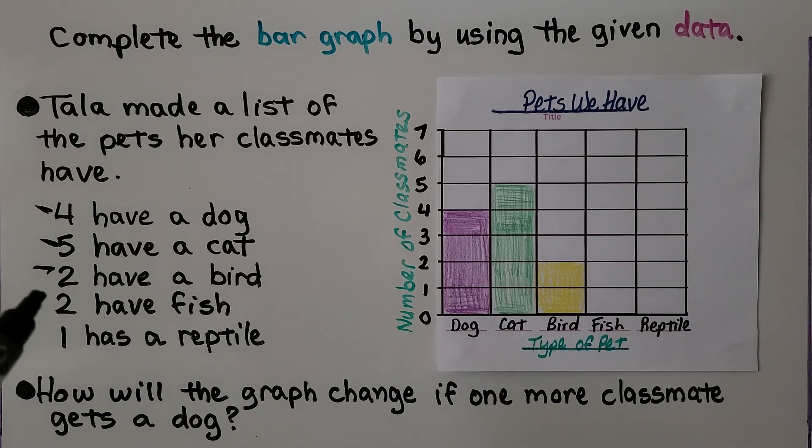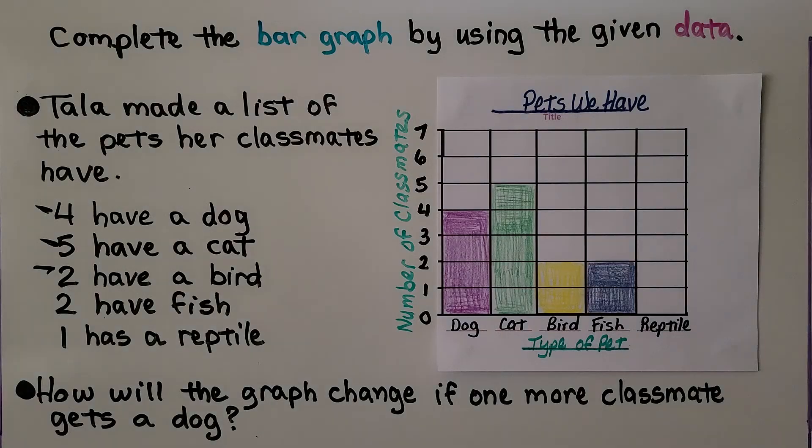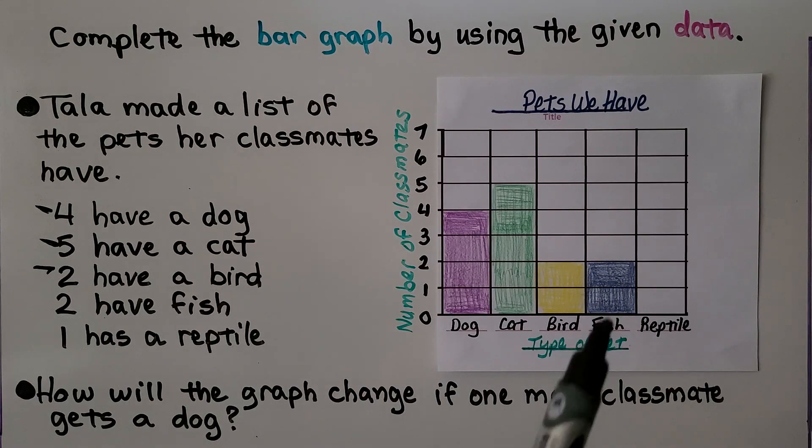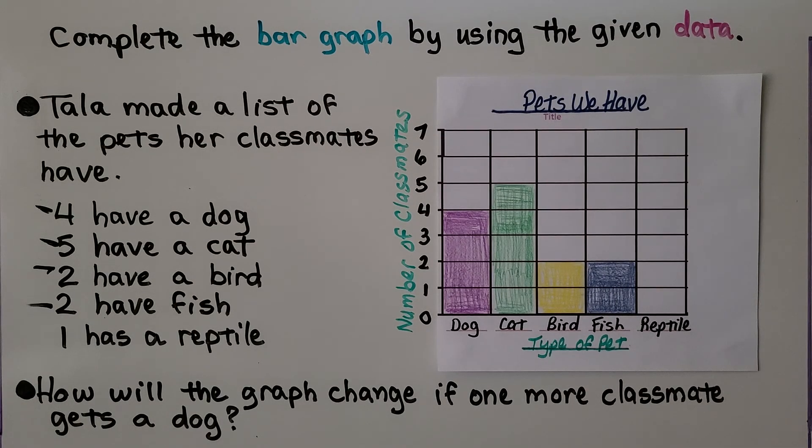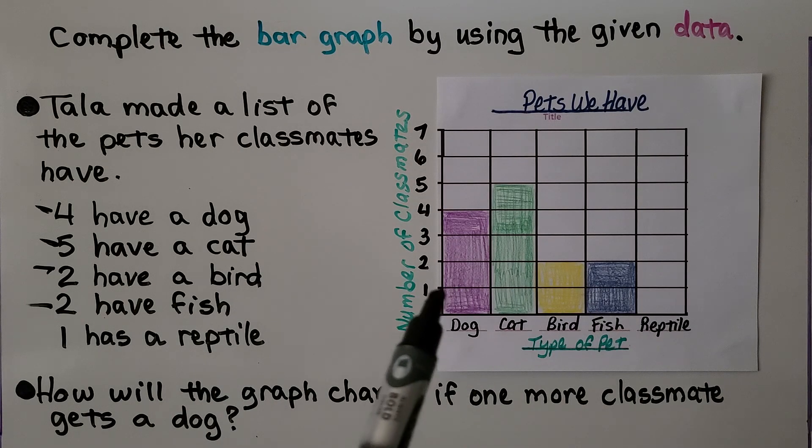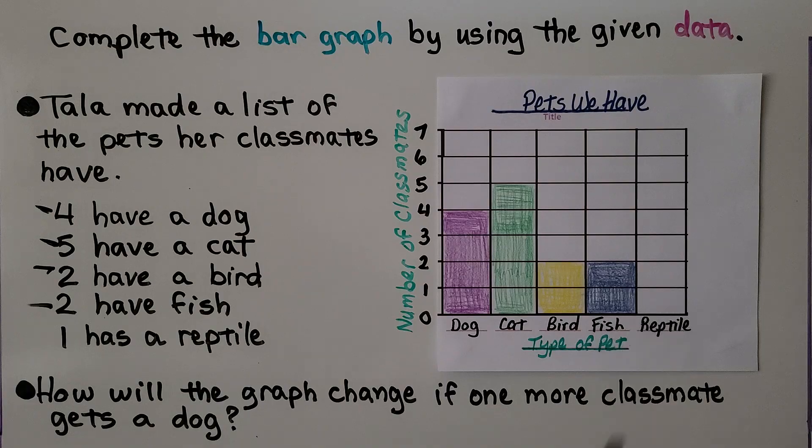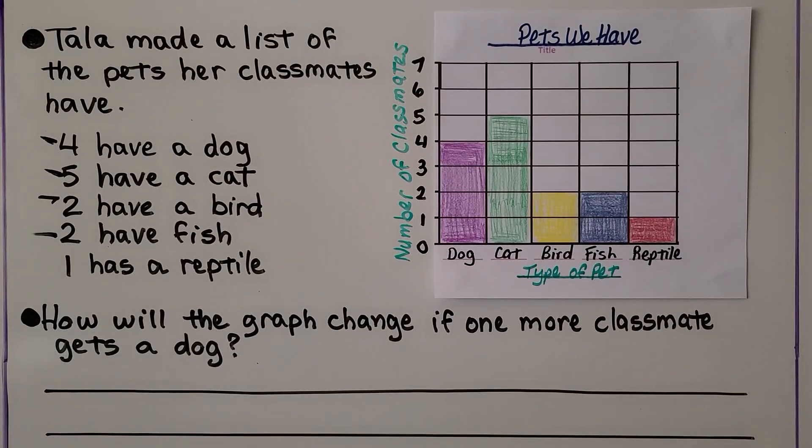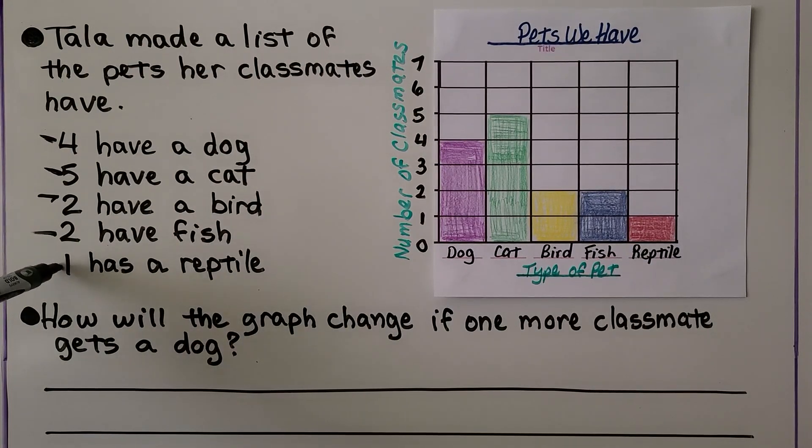Now we need to do two have fish. I chose blue for the fish and I colored it in up to the two on the scale. We see one classmate has a reptile. We go to reptile and we're going to color it in to match the one on the scale. Now we've completed the bar graph with all the information.